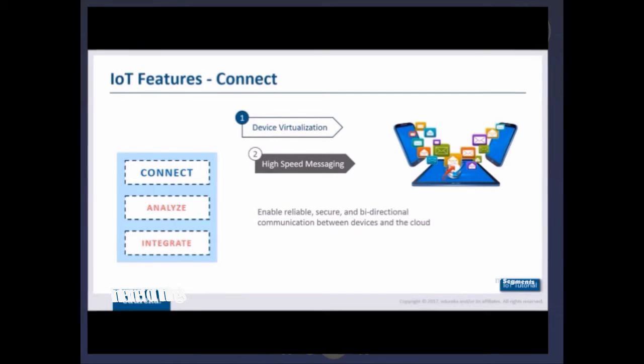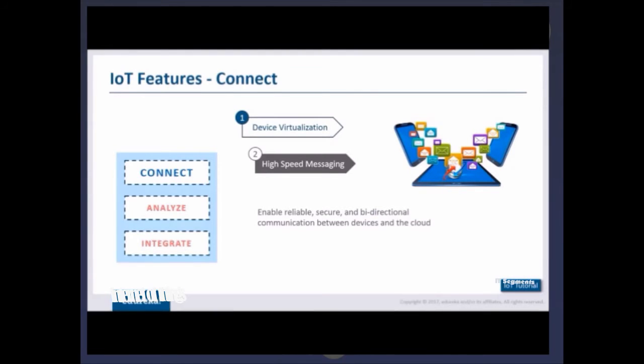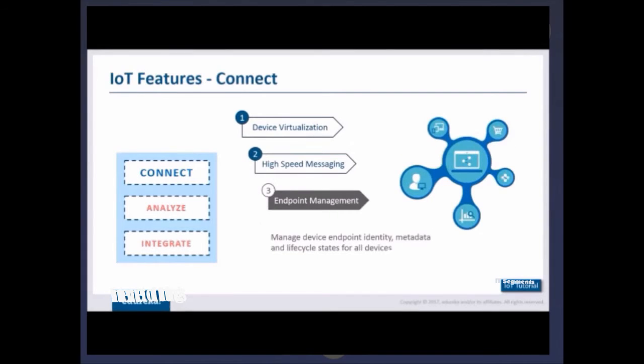The purpose of it being bi-directional is because you need to control each one of them as well. Let's say I want to switch on the AC, the signal goes from the cloud platform to the device. Every communication needs to be reliable, secure, and bi-directional.